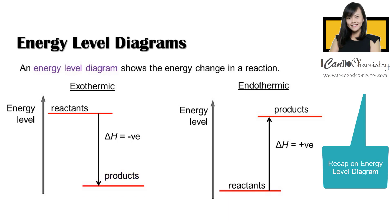Do remember there is a time delay, because products are formed at a later time. We include an arrow pointing down to represent the loss of energy. Take note that delta H, the enthalpy change, is negative in an exothermic reaction. In an endothermic reaction, the products have more energy than the reactants, so we draw a line at a higher level, with the arrow pointing up to represent gaining energy — hence delta H is positive.